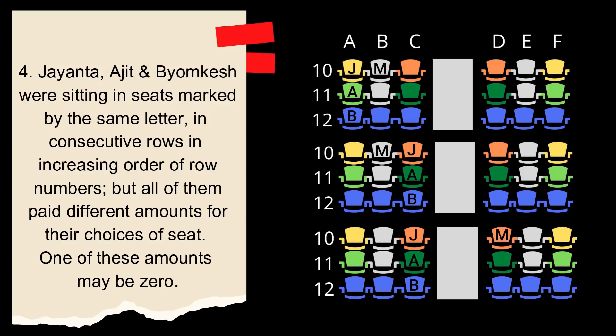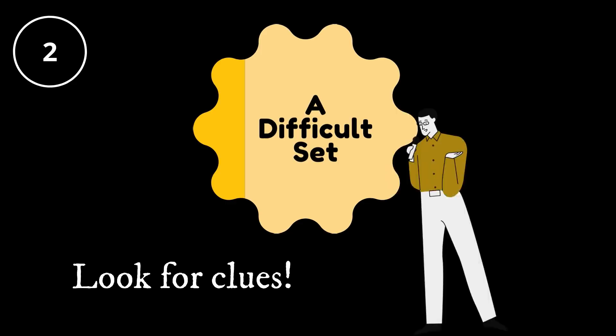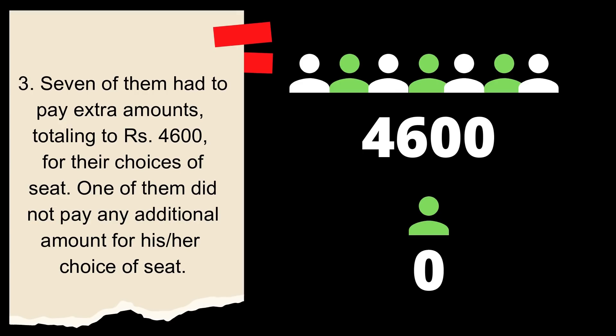This is another important point where a trickier question gets established when a constraint becomes difficult to decode. Which is why you need to read every statement very carefully. Now, the issue when a question reaches a stage like this is that there are so many possibilities that it becomes difficult for you to picture it. Which makes the question difficult. So, one of the ways to solve this is to look for clues that the paper setter would have set in place to make this question easier. And the clue here is constraint number three.